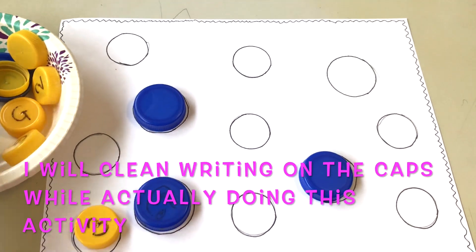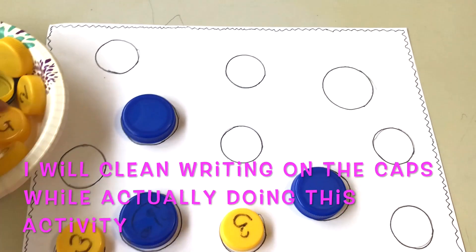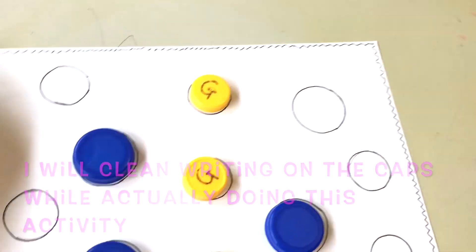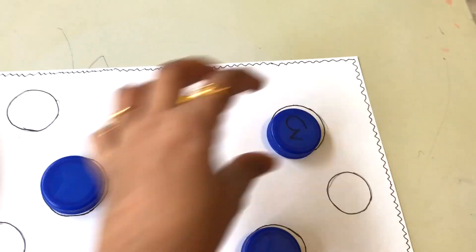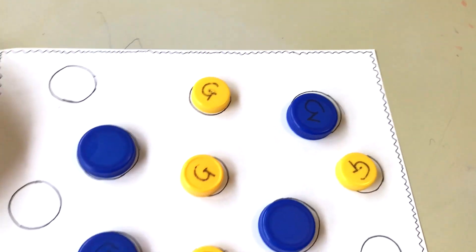While performing this exercise, learners have to match milk bottle caps with the circles on the worksheet. Parents also make sure to say the words big and small so that learners can learn about the difference between big and small.